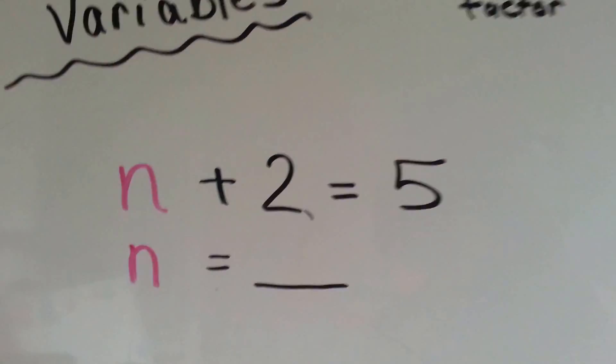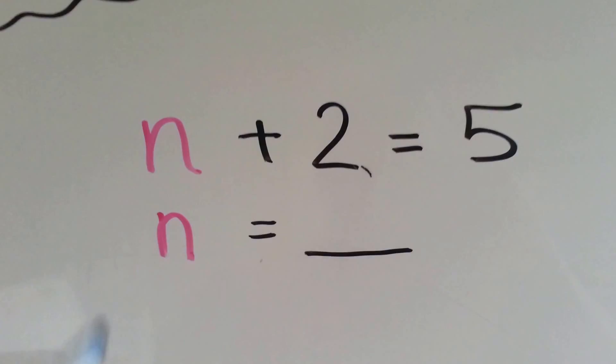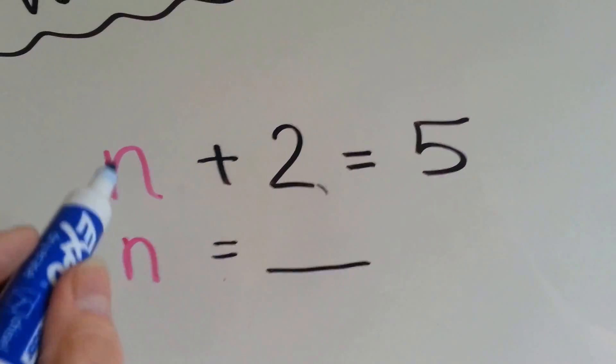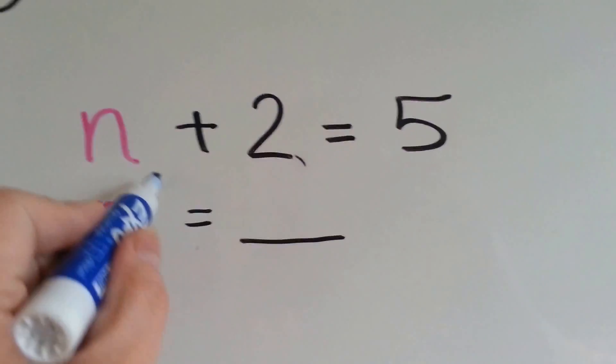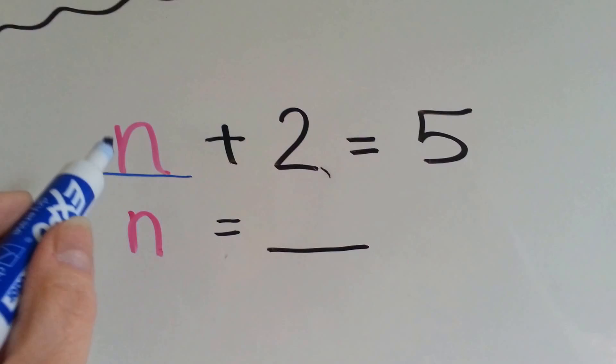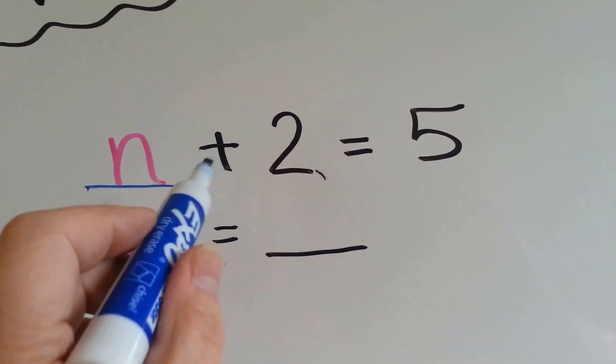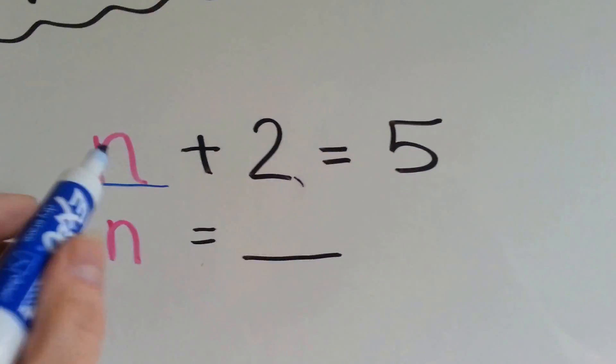So, let's do this easy one here. Let's do addition. The n is taking the place of the missing number. The n is going to stand for a number. n plus 2 equals 5. What could the n be?